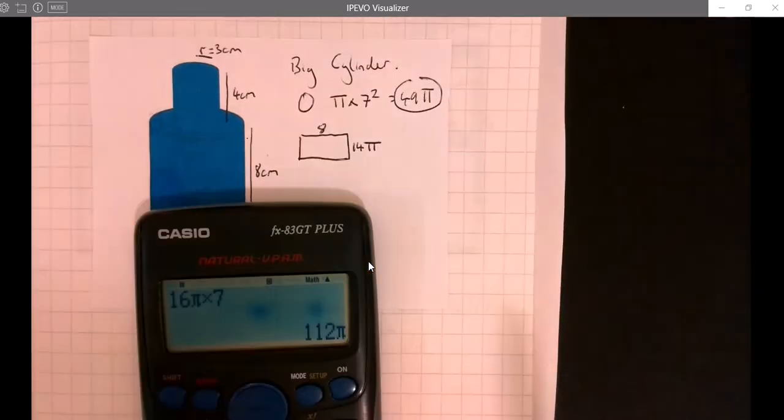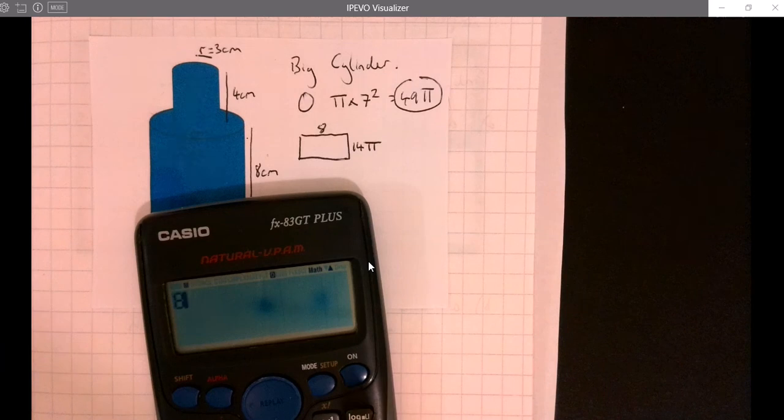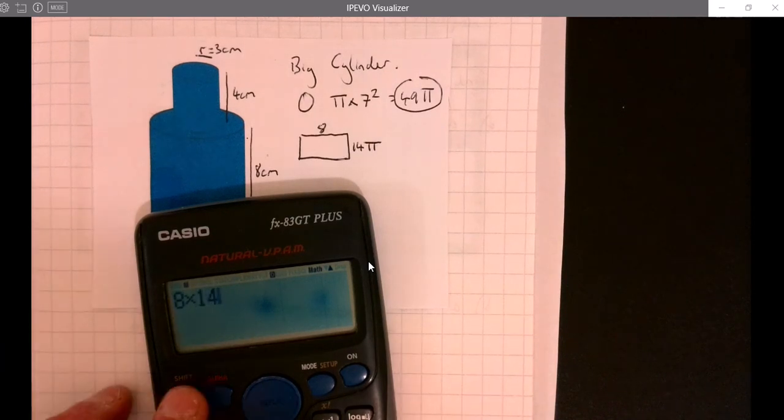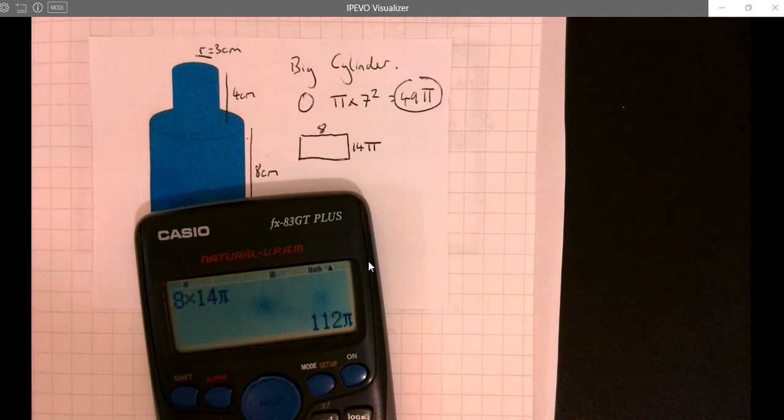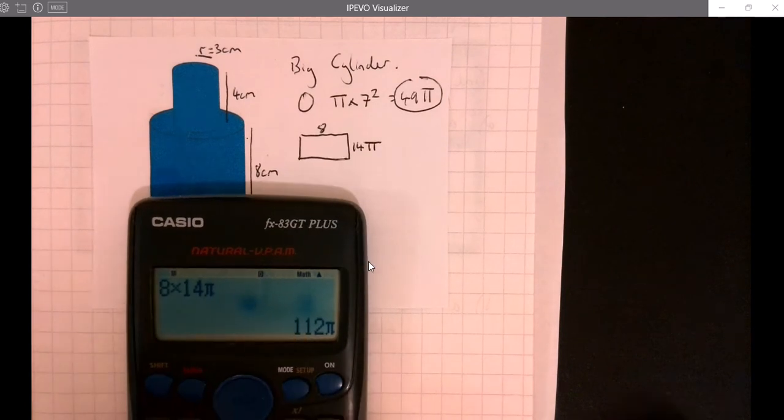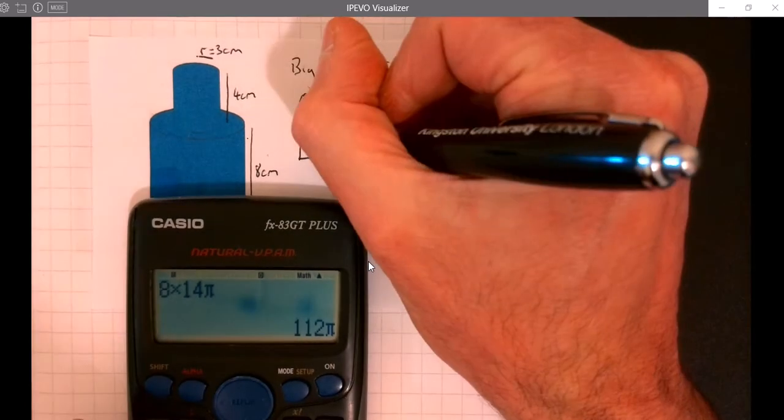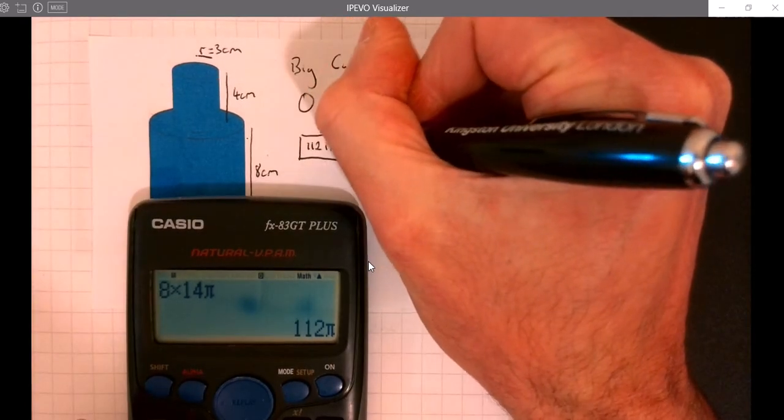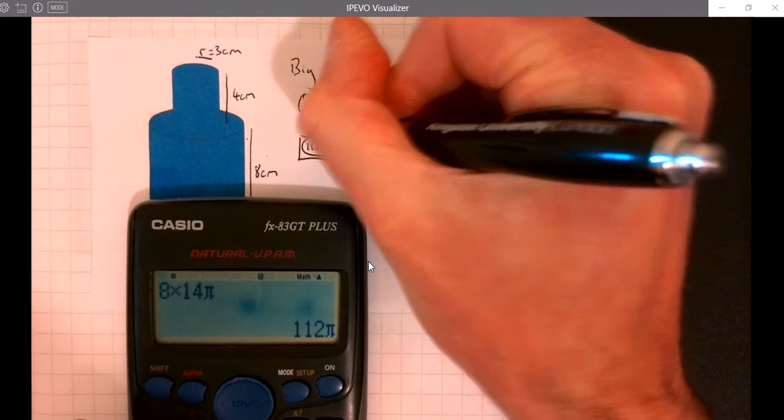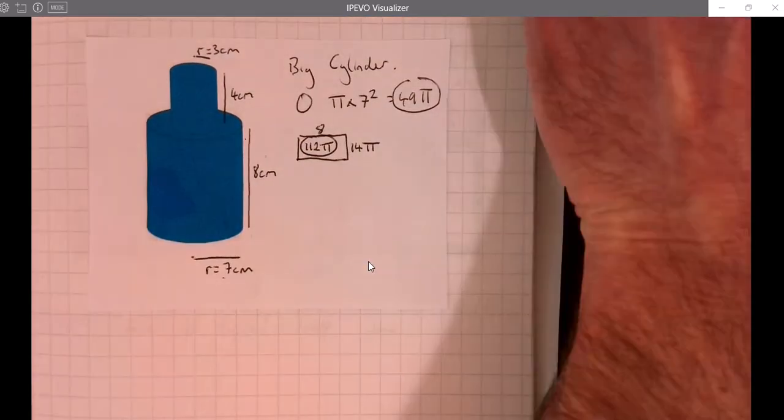The answer to this will be 8 × 14π. If you want the calculator, use your calculator, it doesn't matter. Leave it in terms of π, there we go, 112π. I'll circle the important bits as we go through.